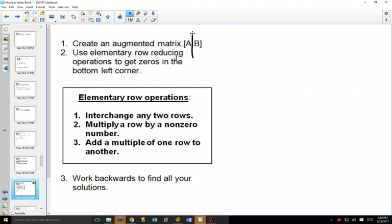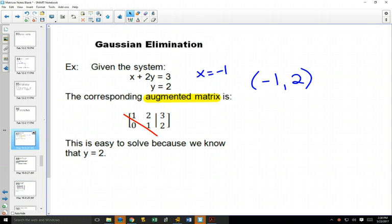Then once you get your diagonal, everything below your diagonal all zeros, you're going to know what one of your variables are. Just like we knew here, y is equal to 2. Once you get y is equal to 2, you can go back to your equations, plug it into the one above it, and find out what x is.